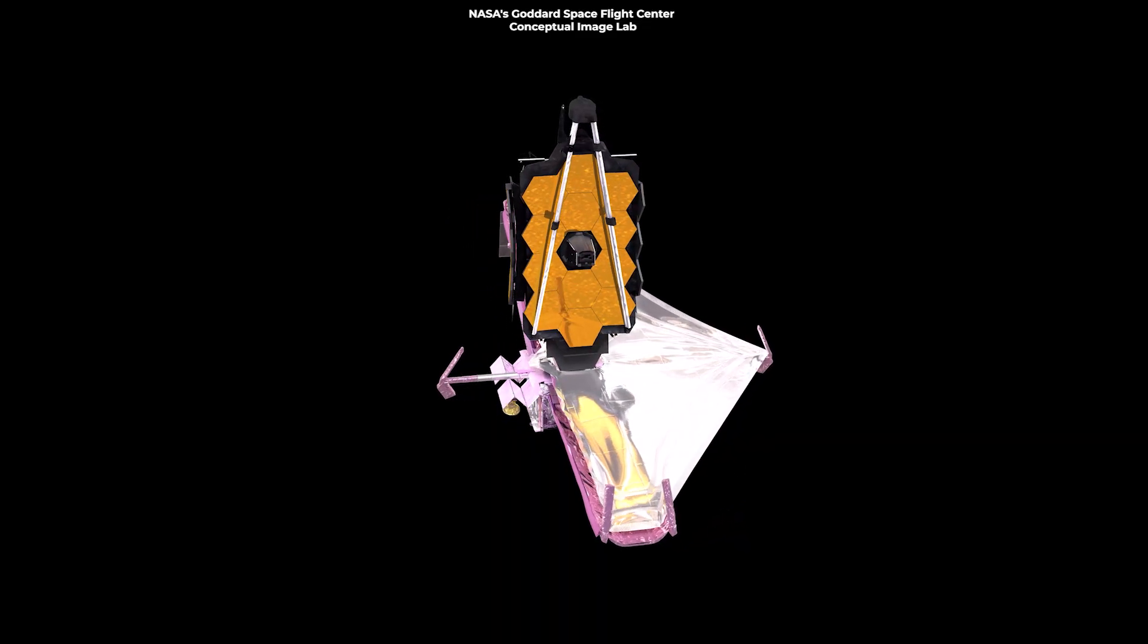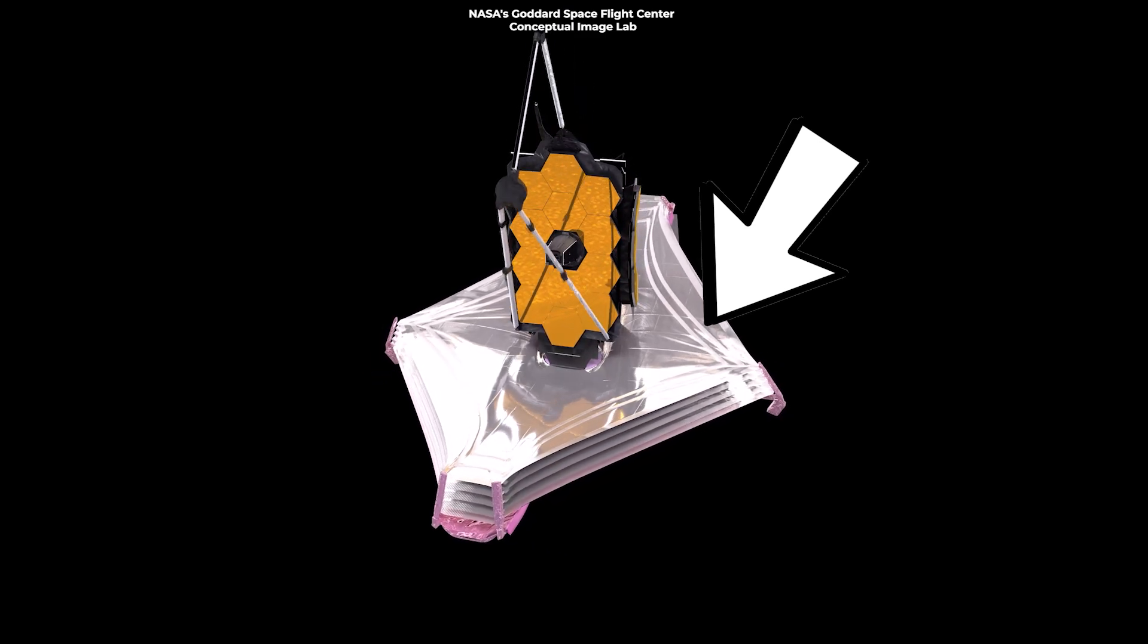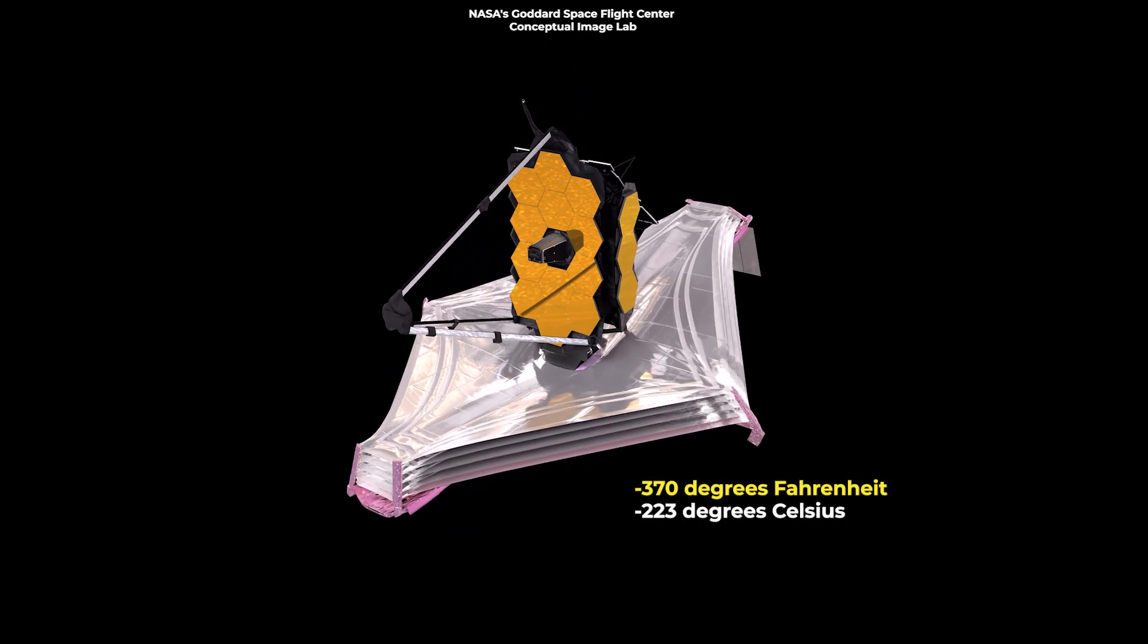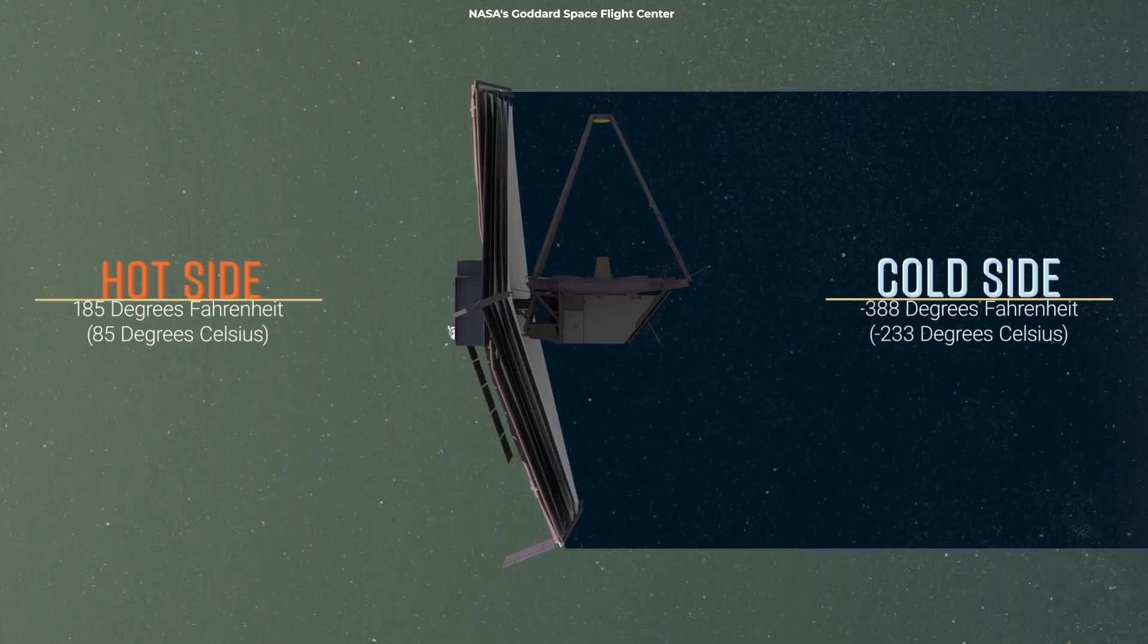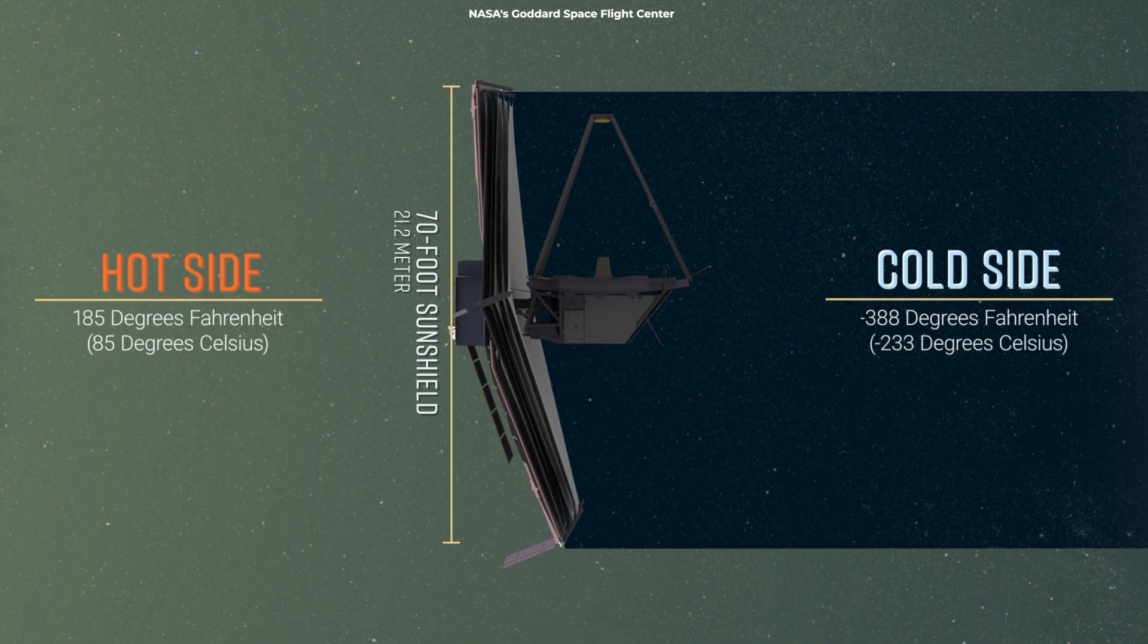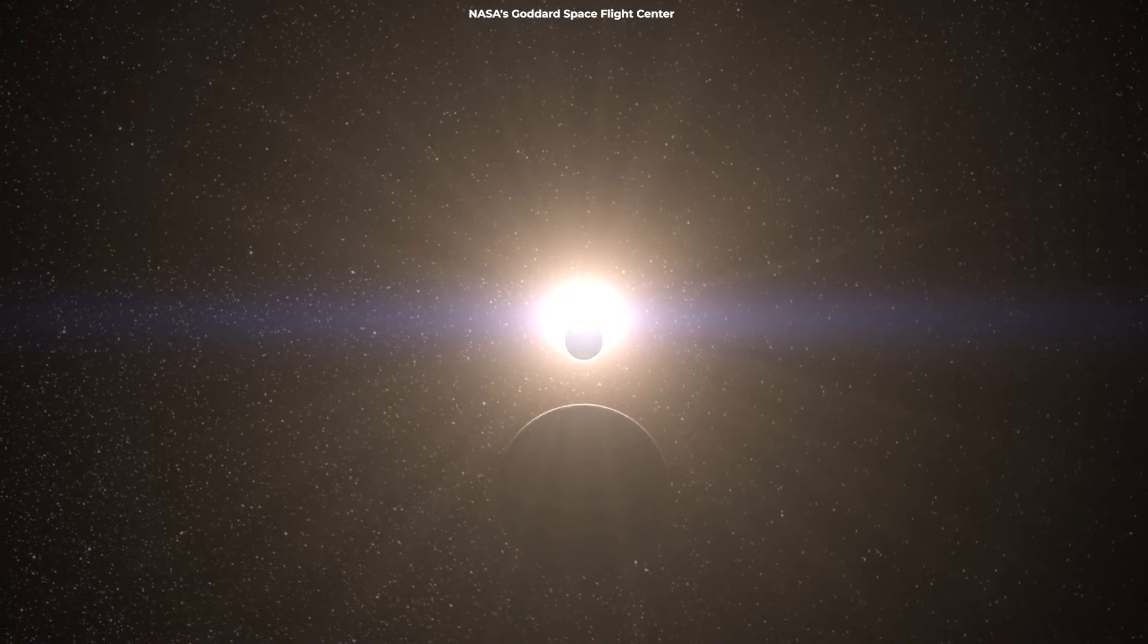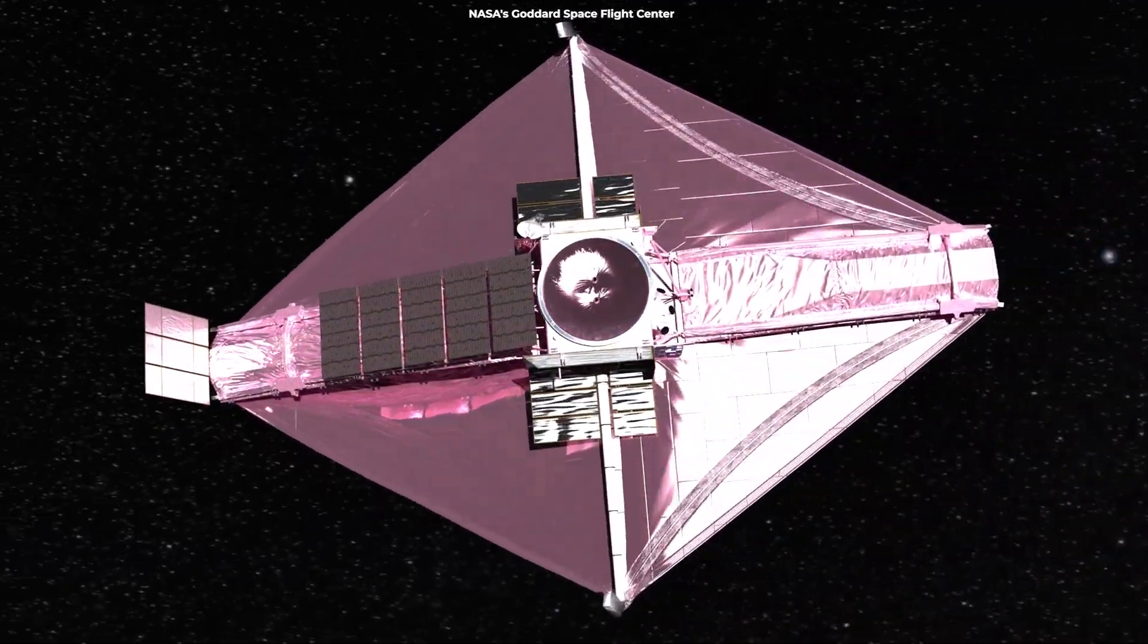To achieve this, Webb relies on its massive sunshield, which keeps its instruments extremely cold, around negative 370 degrees Fahrenheit. This is crucial because even the slightest heat can interfere with the detection of faint infrared light. Webb's sunshield ensures that its instruments can capture the faintest signals from the earliest galaxies.